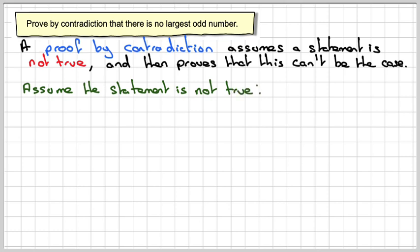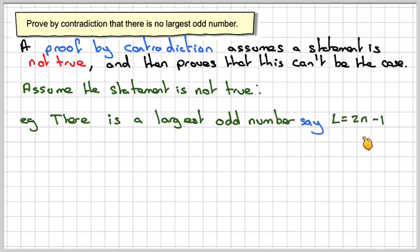So what you're going to say is that there is actually a largest odd number, which we're going to call L. Odd numbers are of the form 2N minus 1, and we're going to say that is the largest odd number.